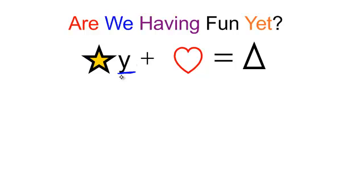What's bothering my y? It seems like it's multiplied by star, and there's a heart added to it. Well, what do you think you do in order to get y all by itself? Well, I'm going to get rid of this heart first. What's the opposite of adding a heart? Subtracting a heart.